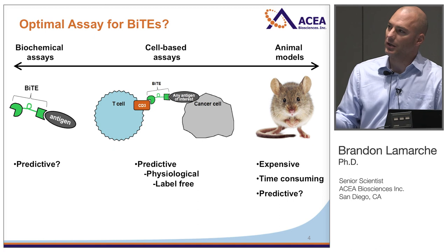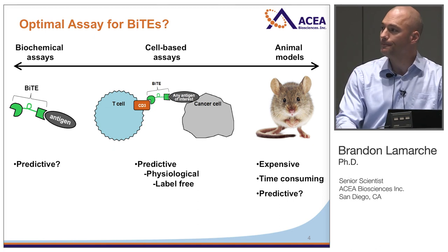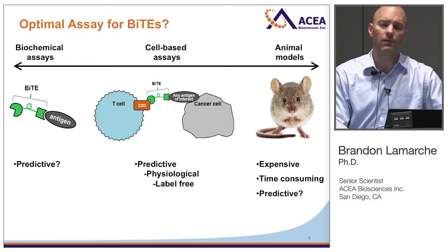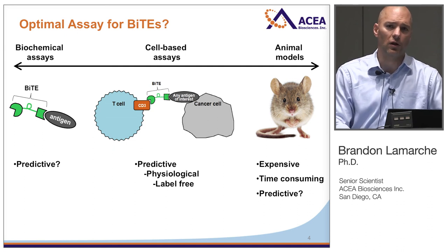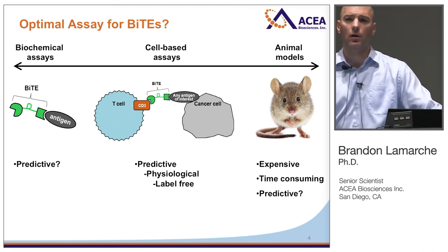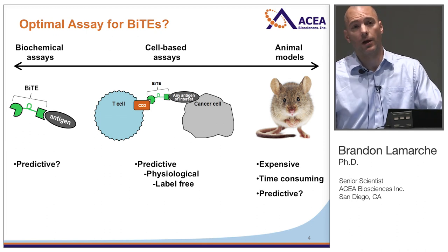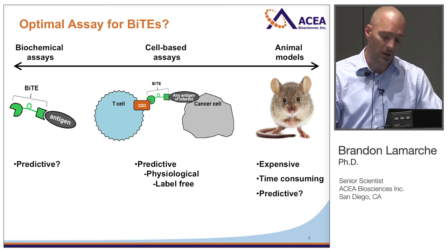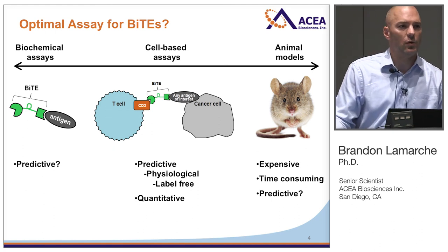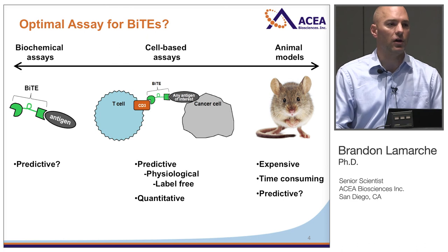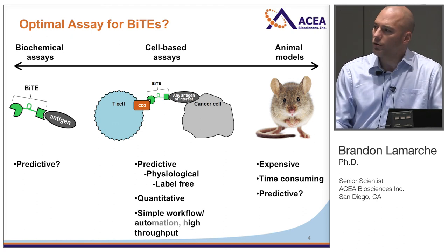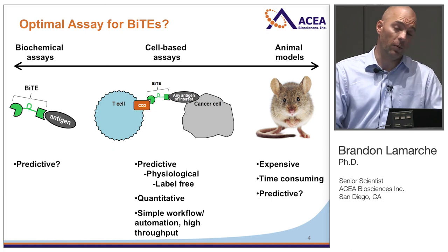So what does the ideal cell-based assay look like for development of an immunotherapeutic like a BiTE? Obviously we want predictivity — we want the in vitro results to be reflective of what's going on in vivo as much as possible, so the assay should be as physiologically relevant as possible. Along those lines, you'd like it to be label-free, since labeling can perturb biology. You'd also like it to be quantitative — ideally able to generate an IC50 value — allowing you to quantitatively compare different constructs or conditions.